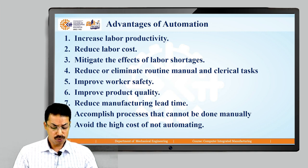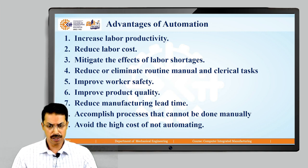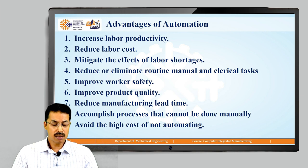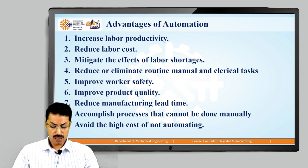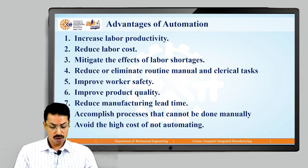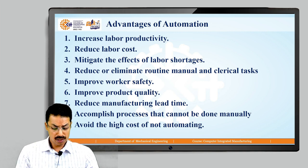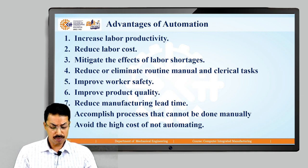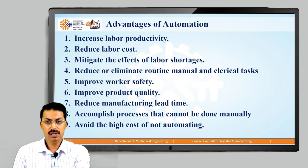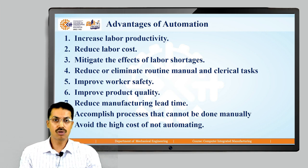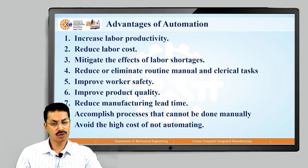Next is accomplishing processes that cannot be done manually. Certain processes are difficult or impossible for human workers — they require precision, miniaturization, or geometric complexity that cannot be achieved manually. Examples include integrated circuit (IC) fabrication, rapid prototyping based on CAD models, and machining of complex mathematically defined surfaces using computer numerical control (CNC). These processes can only be realized through computer-controlled systems.